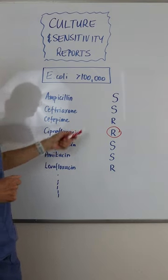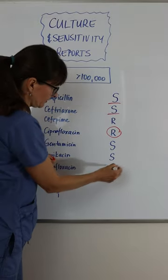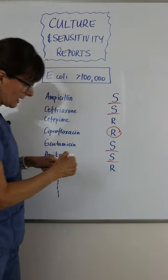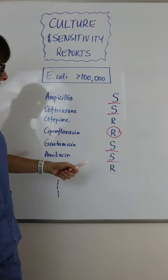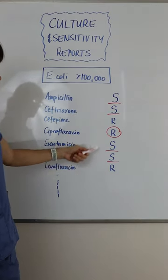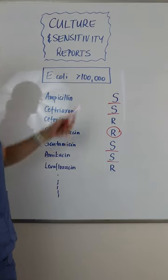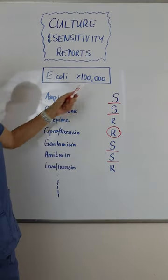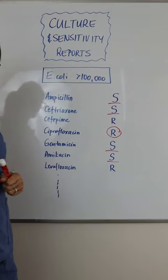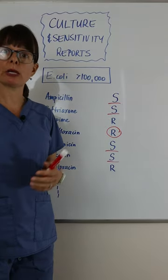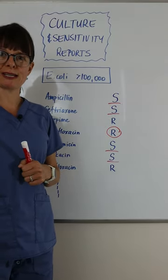Now in addition, we'll look at the ones that actually have that S for sensitive. And then the provider will take a look and actually change the patient's antibiotic to be one of those that the specific E. coli for our particular patient is sensitive to, so that they can get better and we avoid multiple drug-resistant organisms.